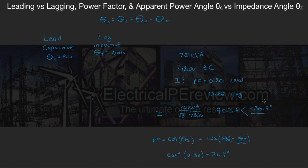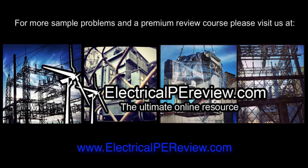So I hope this makes sense. The big key takeaways: our apparent power angle equals our impedance angle, which equals voltage angle minus current angle. Lagging circuits are inductive and the current angle is negative. Leading circuits are capacitive and the current angle is positive. That's it for this video — for more examples and to visit our premium review course, come see us at www.electricalpereview.com.